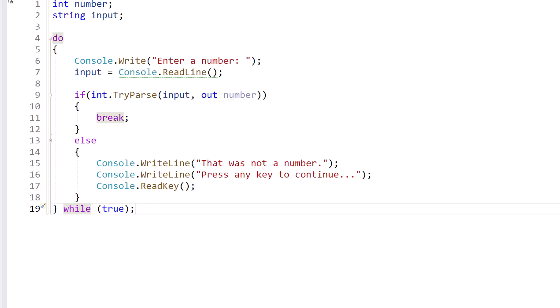Now if it breaks, it's going to come outside the loop. And here we will print the value that they inputted. So I'll say console dot write line, you entered number.